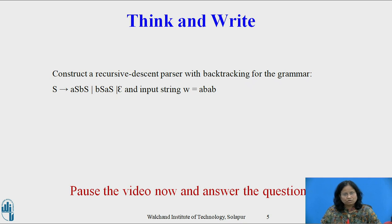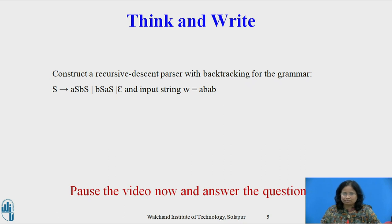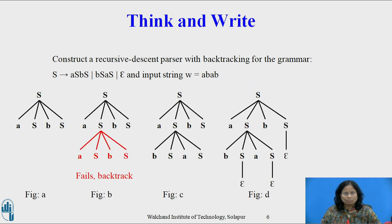Till now we considered the top-down recursive descent parser. Now pause this video and reflect on this question for a minute or two and write your response. Once you have the answer, restart playing the video. The question is: construct a recursive descent parser with backtracking for the grammar S derives aSbS, bS derives aS or epsilon, and the input string W equals abab.